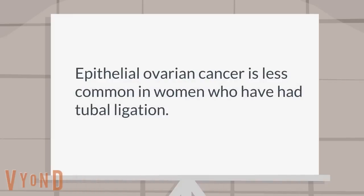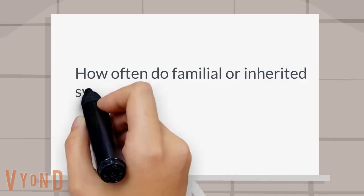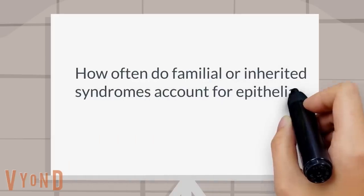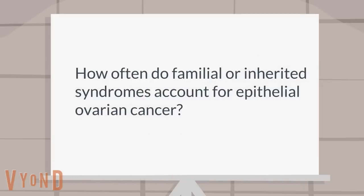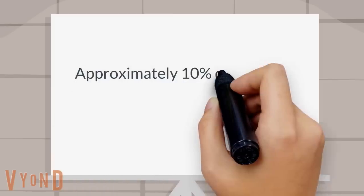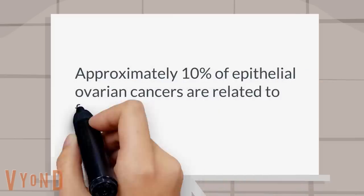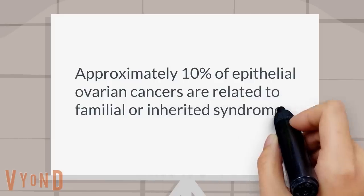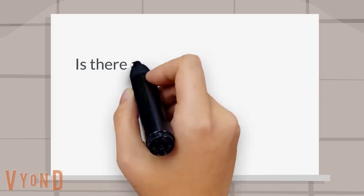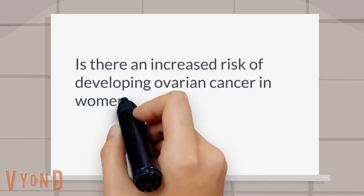Is there an association between tubal ligation and epithelial ovarian cancer? Epithelial ovarian cancer is less common in women who have had tubal ligation. How often do familial or inherited syndromes account for epithelial ovarian cancer? Approximately 10 percent of epithelial ovarian cancers are related to familial or inherited syndromes.